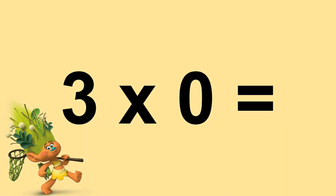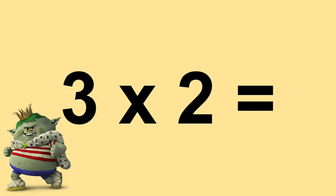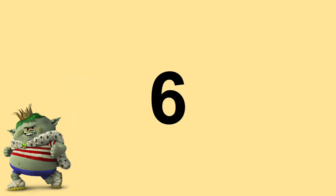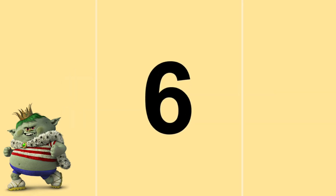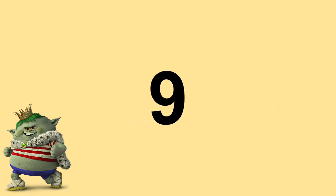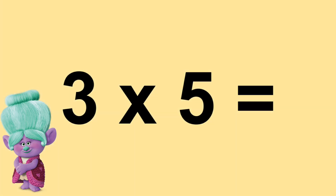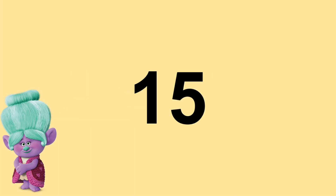Three times zero equals zero. Three times one equals three. Three times two equals six. Three times three equals nine. Three times four equals twelve. Three times five equals fifteen.